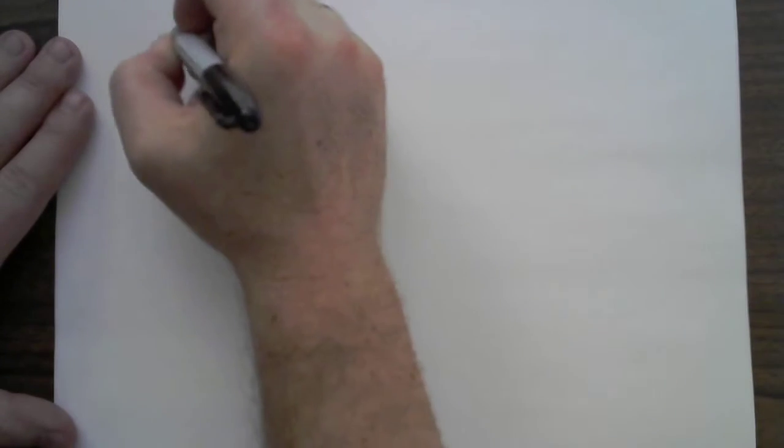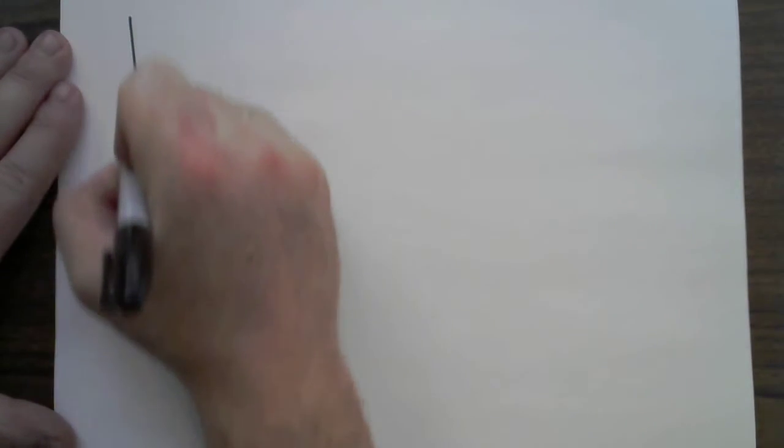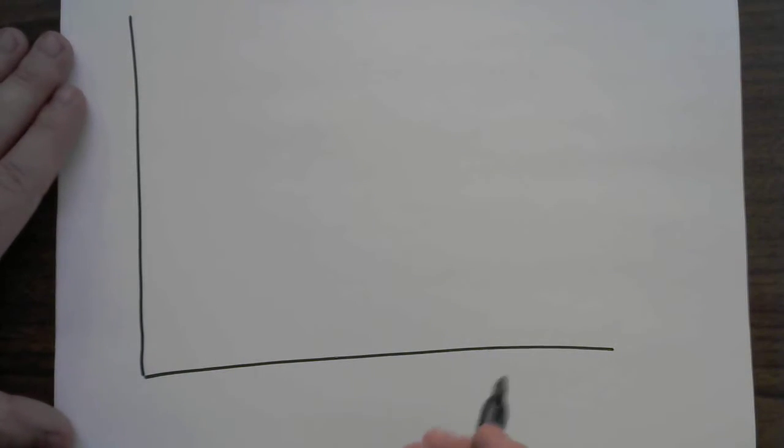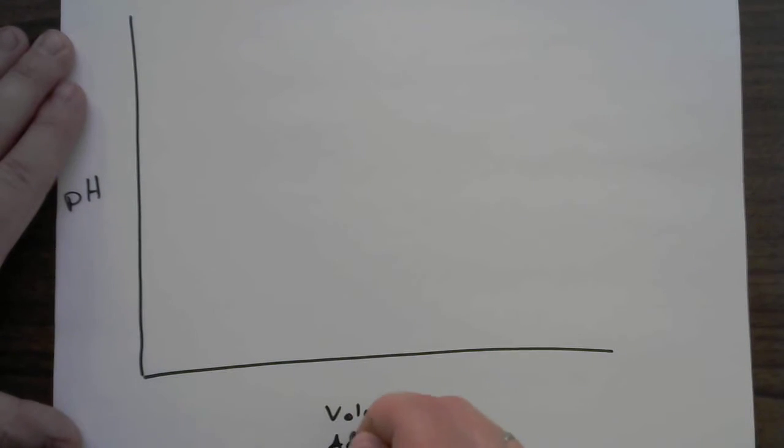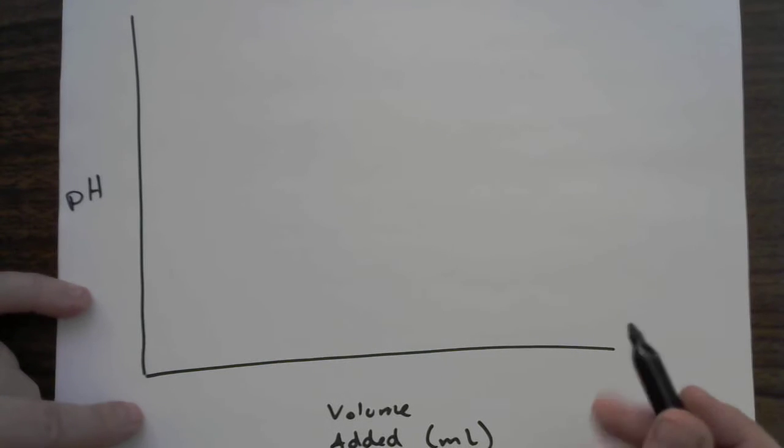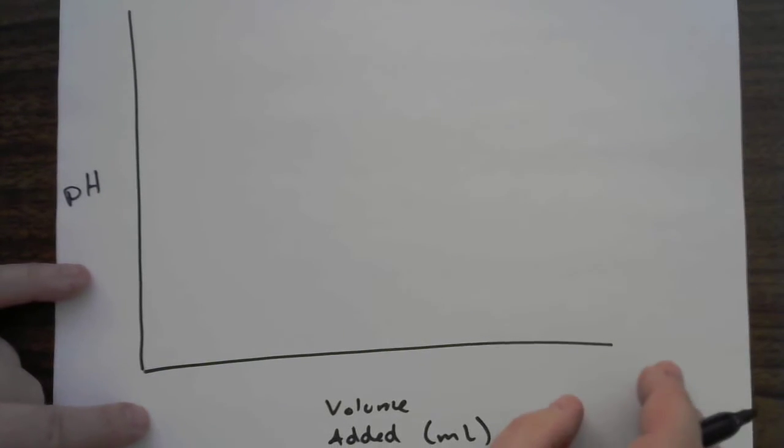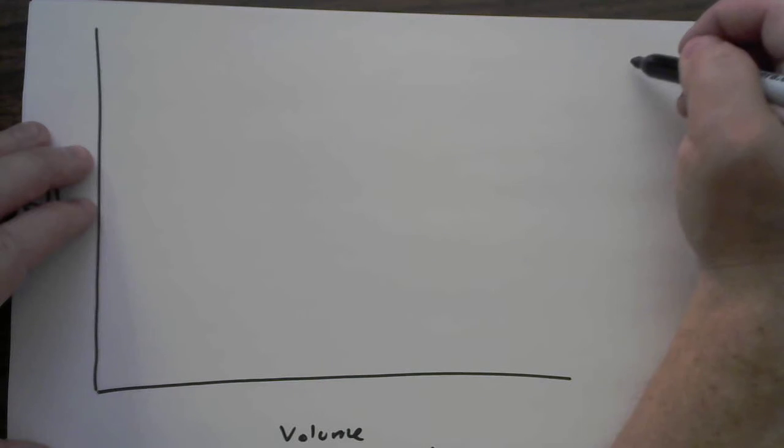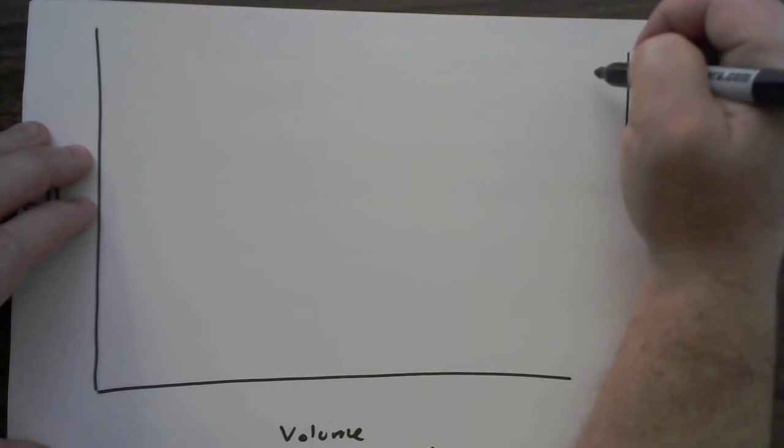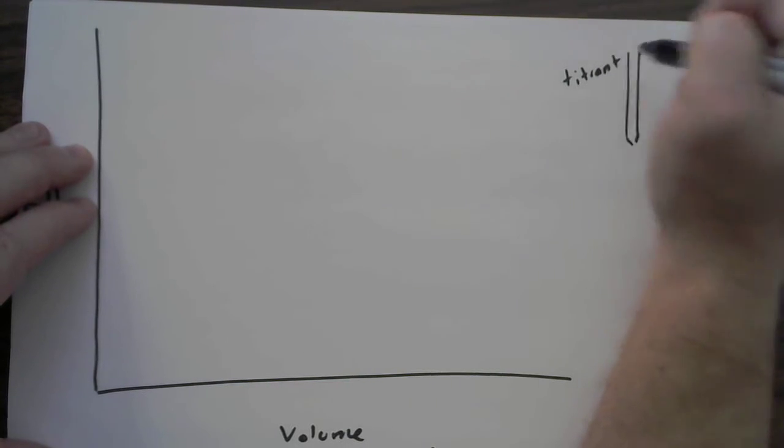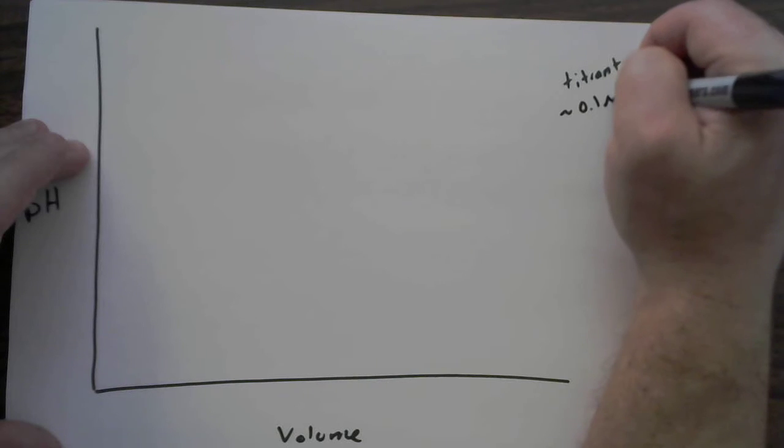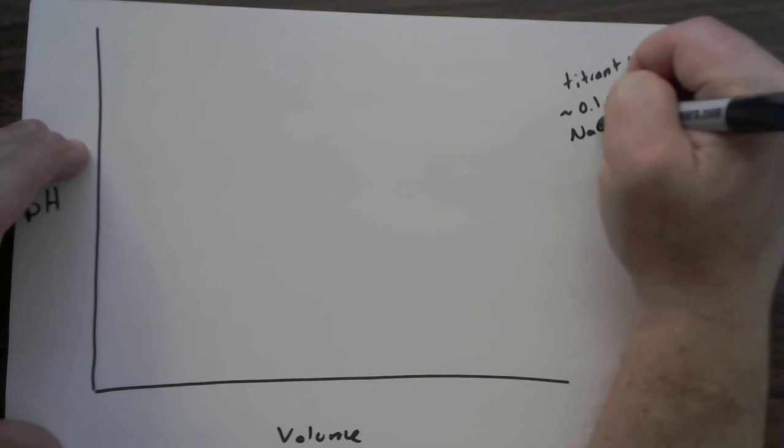I went ahead and pre-wrote some stuff just so that you don't have to watch me write it all out. What I want here, though, is I want one really big version of this curve so that we can really look at it in detail. So this is going to be the pH. This is going to be the volume added. Typically, this would be in something like milliliters of titrant that you would have. This is always a known concentration.